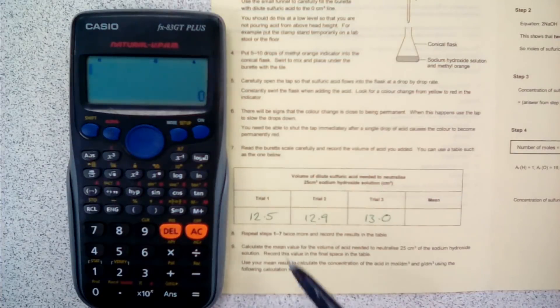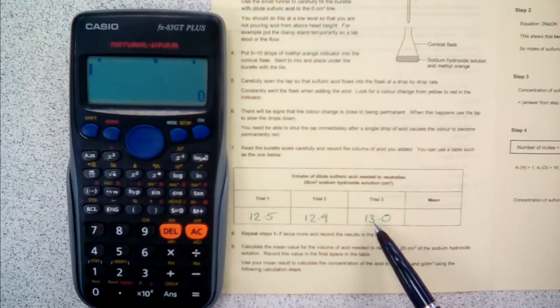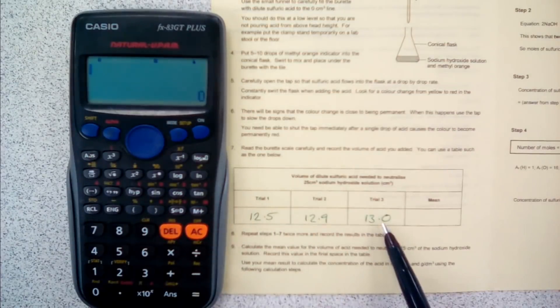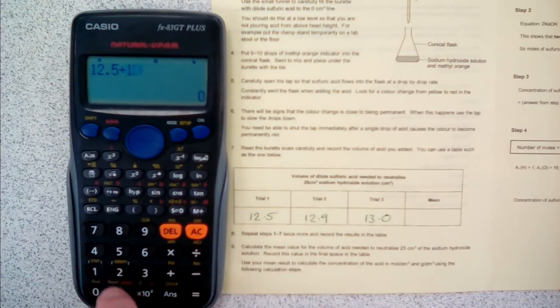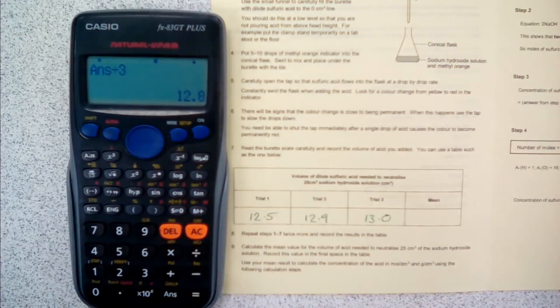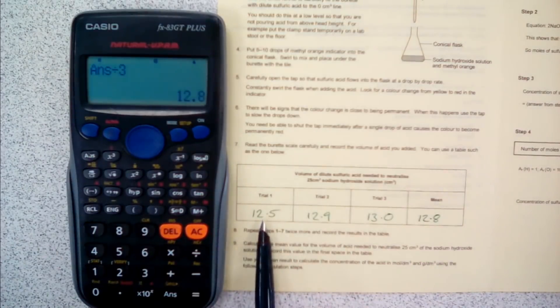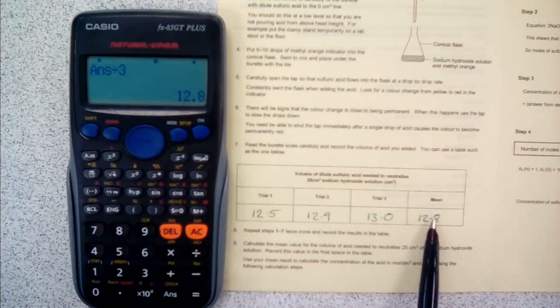Here we have our three results from the titration: 12.5 centimeters cubed, 12.9 centimeters cubed, and 13.0 centimeters cubed. We now need to calculate the mean. To do that we have to add up these three and then divide the answer by three. On our calculator: 12.5 plus 12.9 plus 13, then press equals, and then divide by three, otherwise you'll get the wrong answer. Our mean is 12.8. We can do a sanity check: 12.5 is the lowest, 13 is the highest, so our mean should be somewhere between those two. 12.8 is between 12.5 and 13, that looks like a right mean.